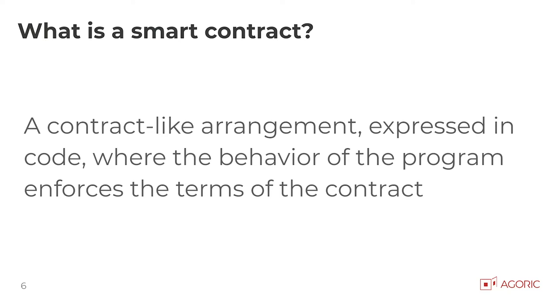What's a smart contract? For the last 30-some-odd years, since before blockchain, a smart contract to us is an arrangement between multiple parties — a contract-like arrangement that we can express in software, in code, where the behavior of that code enforces the terms of the contract. We did this with cryptographic protocols between machines long before blockchain, and smart contracts represent upwards of a trillion dollars or more in market cap.